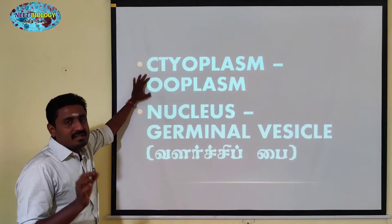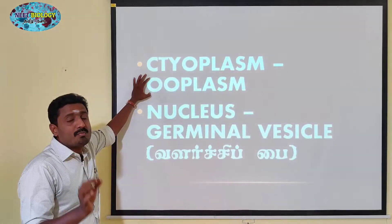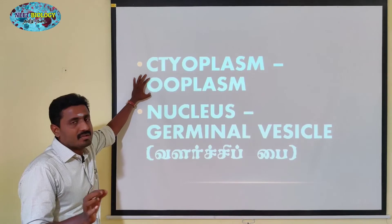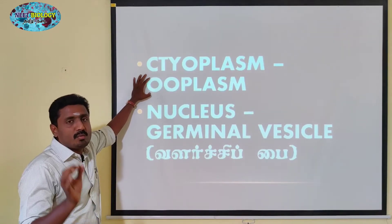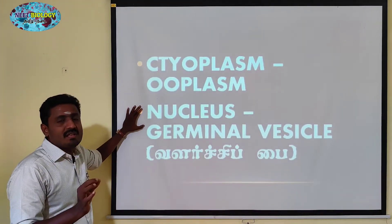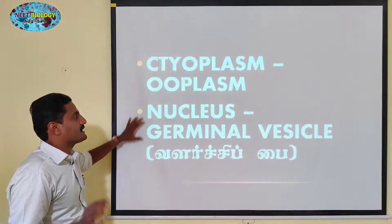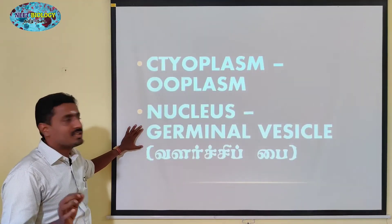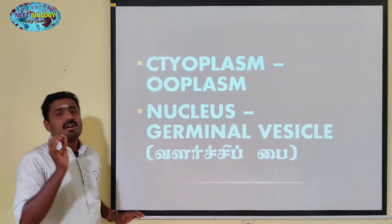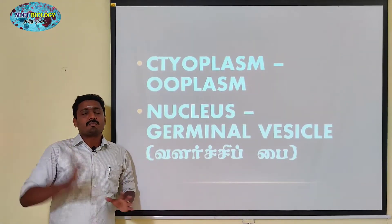In the human ovum, the nucleus is present. It is called the germinal vesicle, also referred to by its local term.